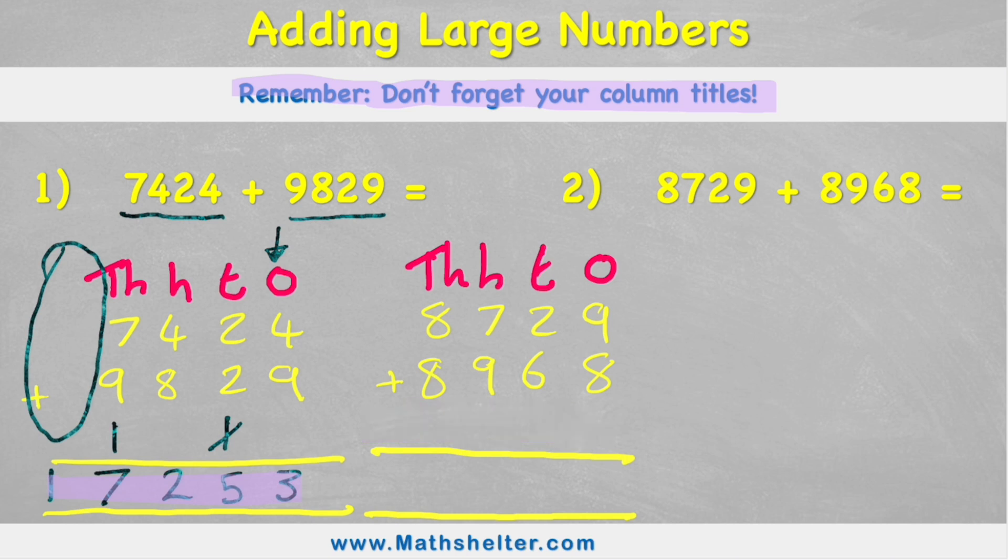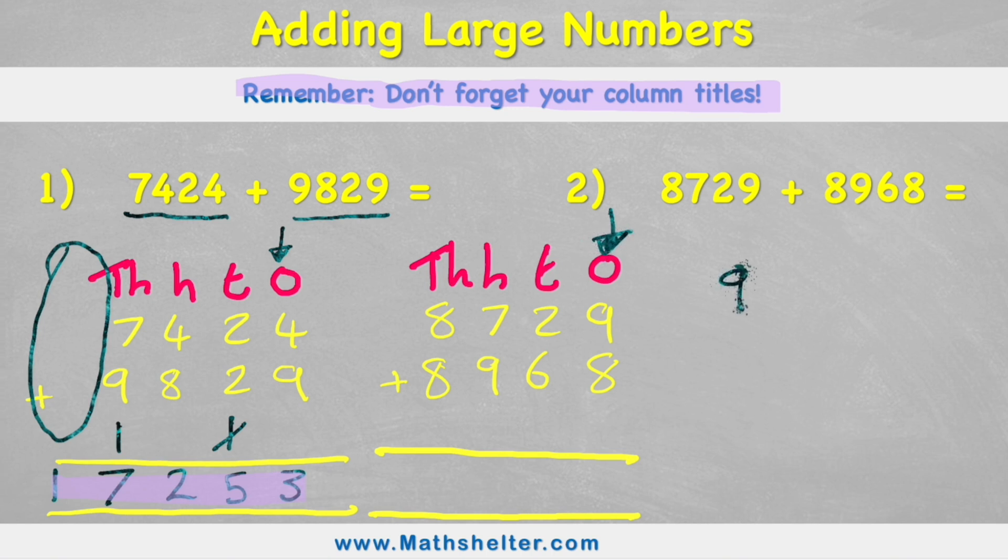What's my first question? Always start with my smallest value, in this case 1s. And I have 9 ones added to 8 ones, which equals 17 ones. Or in other words, 1 ten, and a 7. Carry my 1 ten across and put my 7 ones in the answer row.